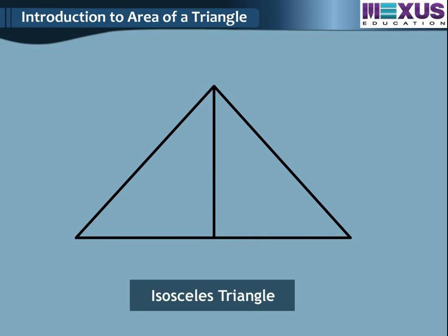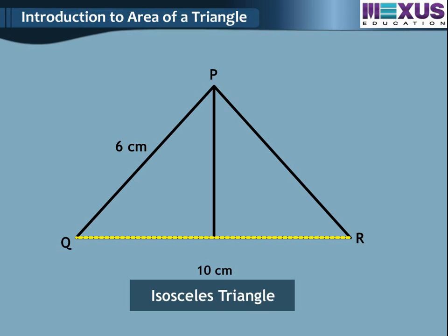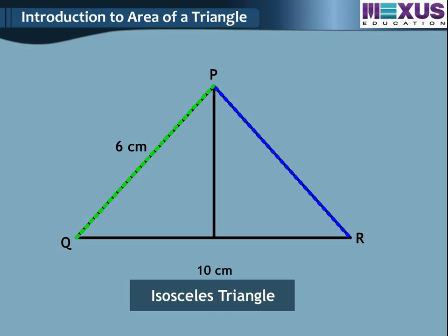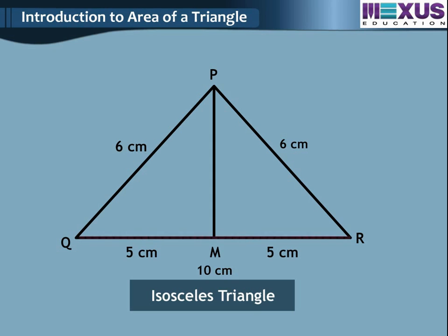Now, we will see how to calculate the area of an isosceles triangle. We use the same Pythagoras theorem approach. In triangle PQR, given PQ is equal to 6 cm and QR is equal to 10 cm. Find the area of the triangle. In an isosceles triangle, two sides are always equal, so PQ equals PR equals 6 cm. M is the midpoint, therefore QM equals 5 cm, as QM is half of QR.